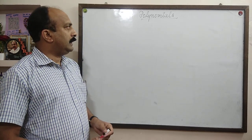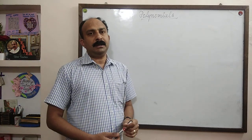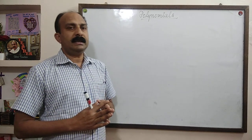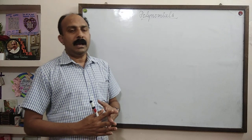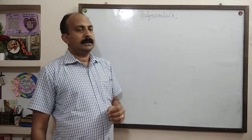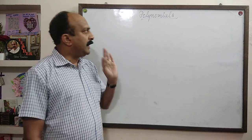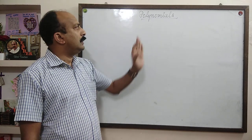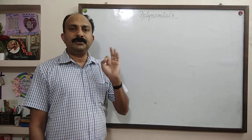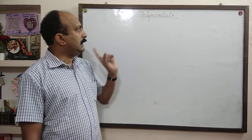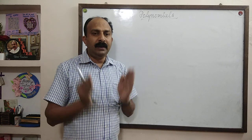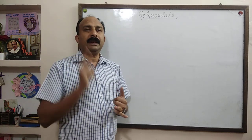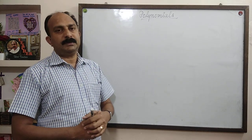Hello students, today I am with the second chapter of class 9 mathematics and the chapter is polynomials. What is a polynomial? Polynomial is an algebraic expression, and the necessary condition for a polynomial is that the power of the variable must be always a positive integer. The power should not be minus, the power should not be rational. Such an algebraic expression is called a polynomial.